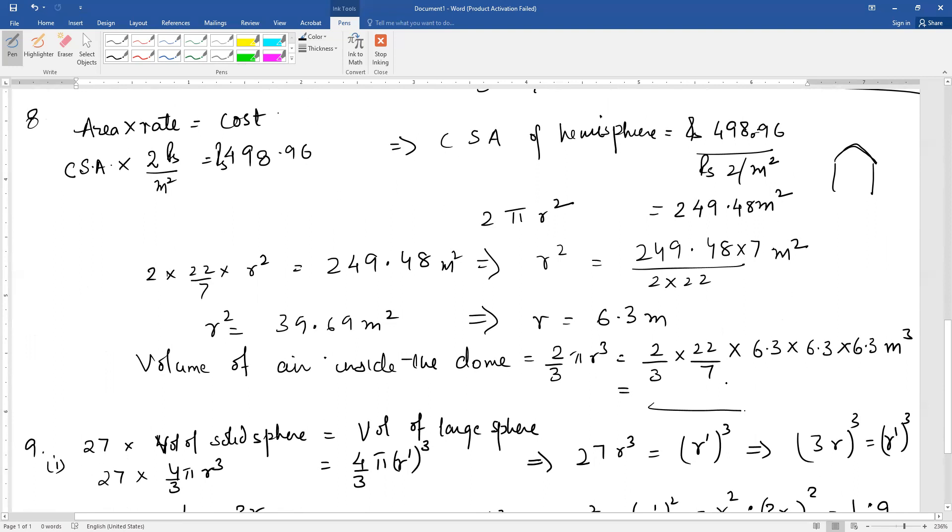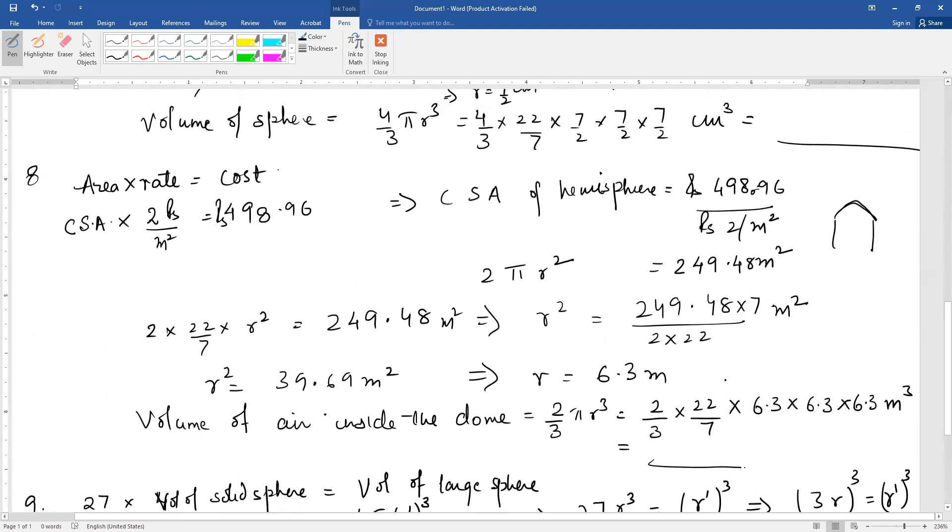Question number 9 is, 27 solid spheres each of radius r and surface area s are melted and recast into a form of a sphere with surface area s'. When you take a shape, melt it, and recast it into another shape, the volume of matter remains the same. You have to remember this.